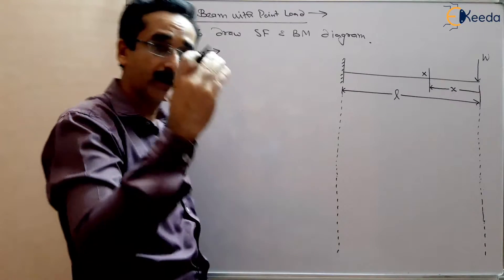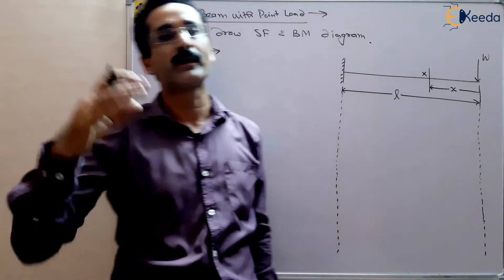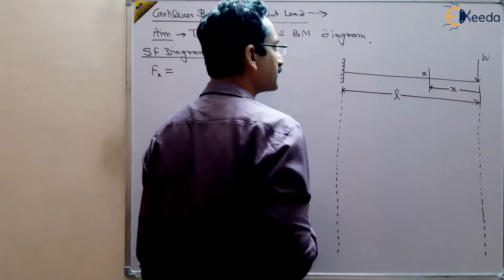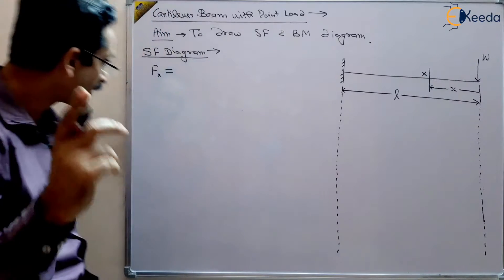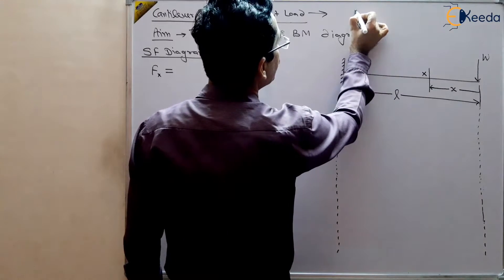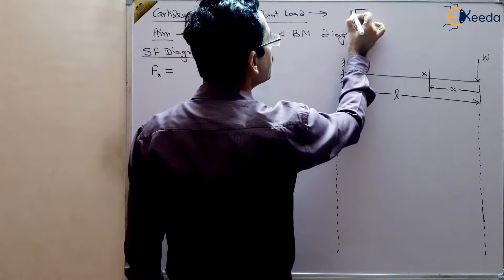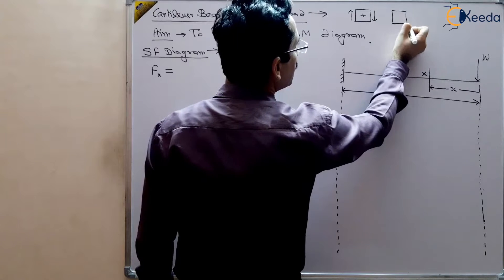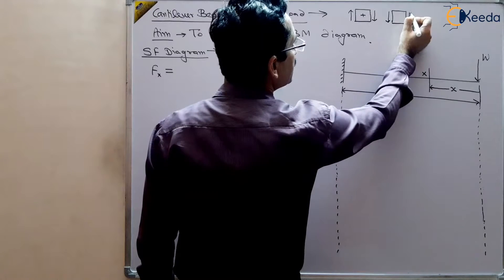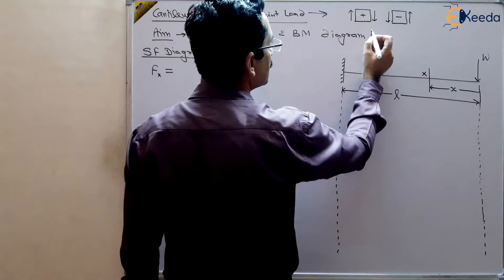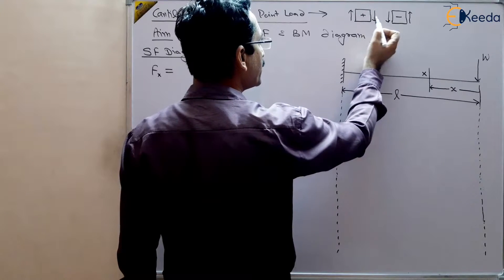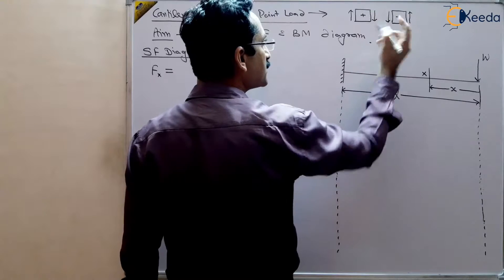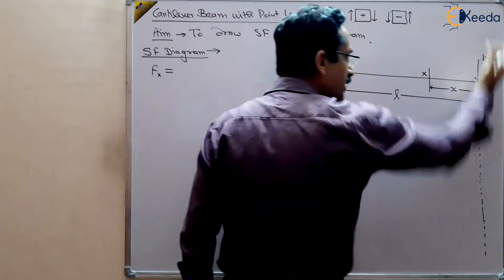Shear force is the algebraic sum of all the vertical forces to the right or left of the section. We are taking to the right of the section because we have taken the cross section from the free end. Remember the sign conventions: for shear force, if the force is on the right side and it is downward, it is positive; if upward, it is negative. This W is downward, so it will be positive.